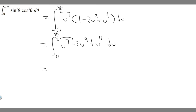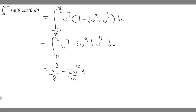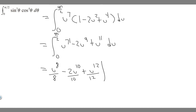Taking the antiderivative — add one to each exponent and divide by it — gives us: u⁸/8 − 2u¹⁰/10 + u¹²/12. So we have u⁸/8 − 2u¹⁰/10 + u¹²/12, evaluated at our bounds.